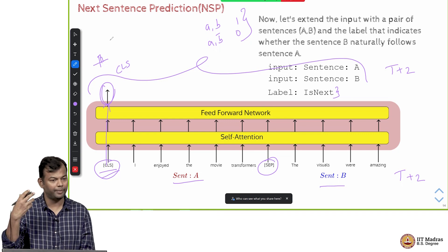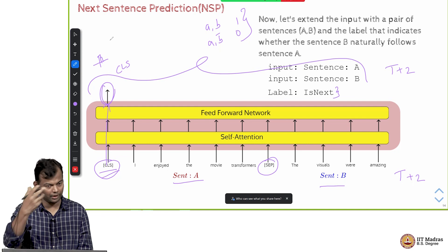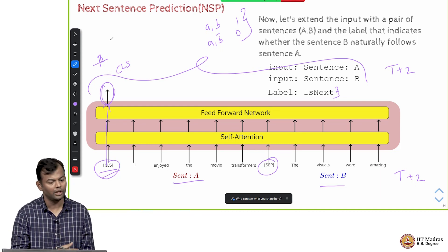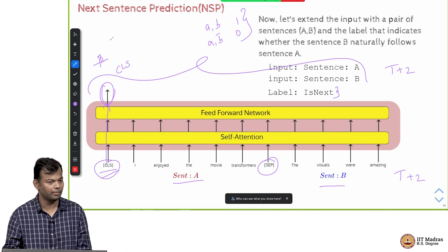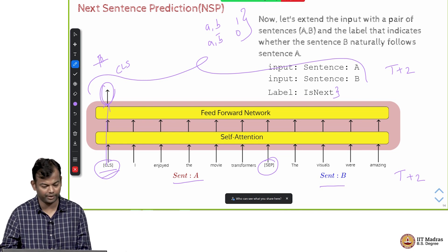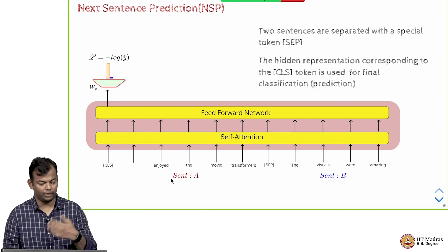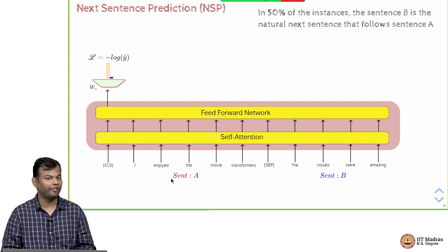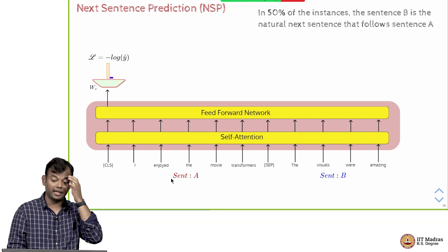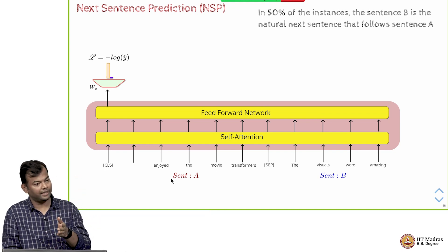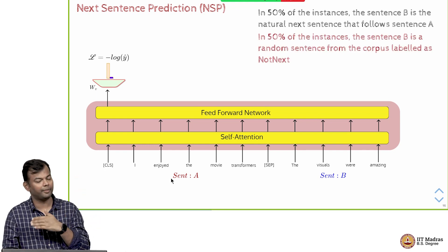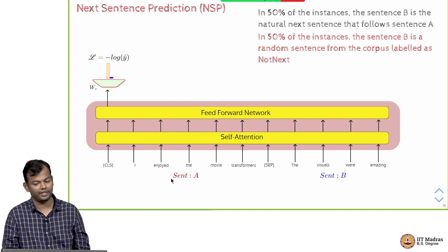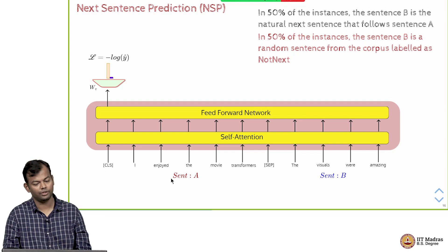One was predicting the mask tokens correctly using the cross entropy loss over the vocabulary, and the second one was this next sentence prediction which is just a binary classification problem, a two class cross entropy loss function. As already said they have a separator token and a CLS token, and 50 percent of the instances sentence B is the natural sentence following A, and another 50 percent of the sentences sentence B was replaced by a random sentence from the corpus and it was labeled as not next.